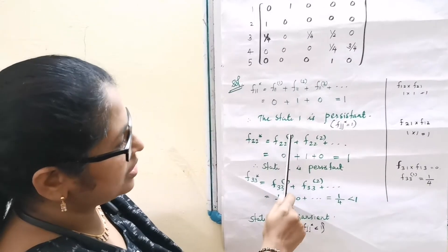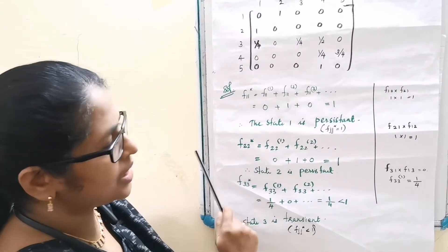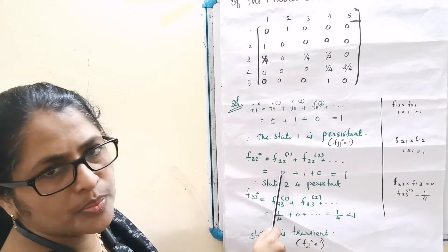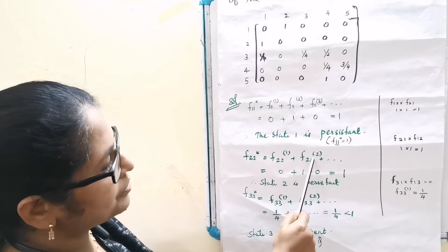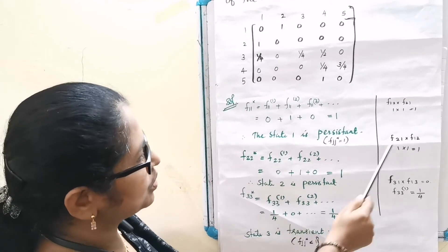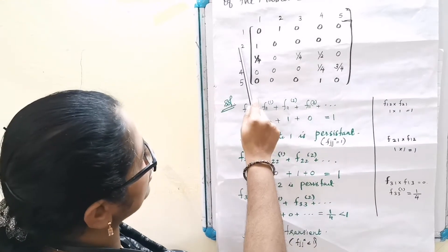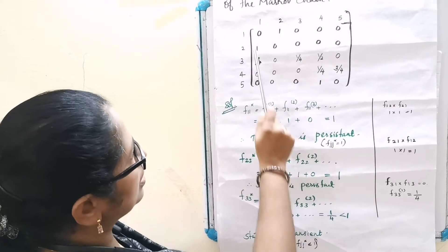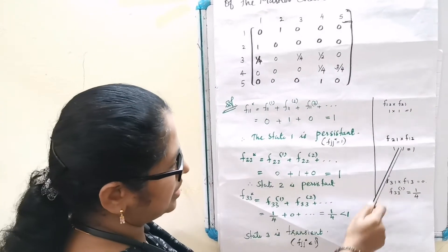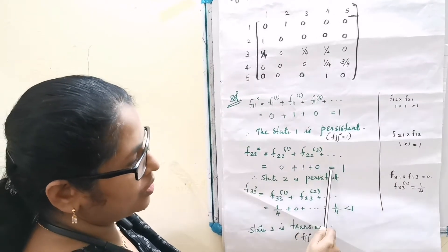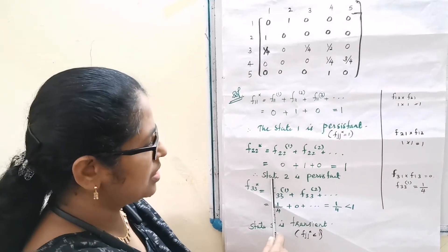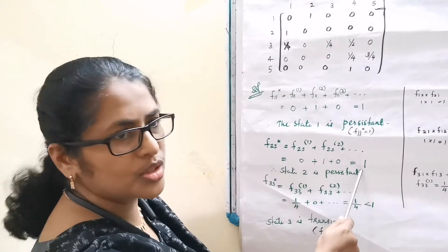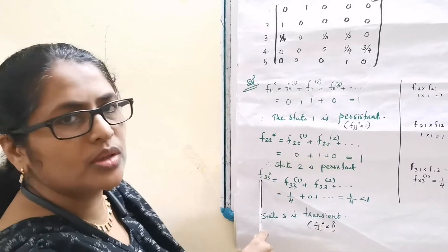F221 — starts from 2, reaches 2 for the first time in 1 step — that is not possible, so probability 0. F222 — F21 possible, then F21 possible, then F12 possible — that is 1 into 1, equal to probability 1. Other probabilities are 0, so F22* equal to 1. That means state 2 is persistent.